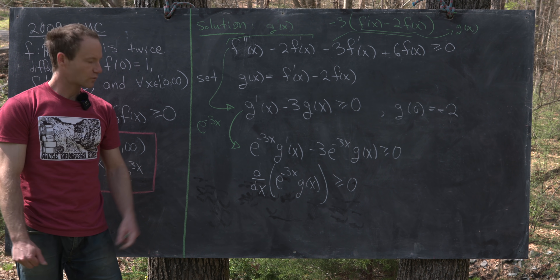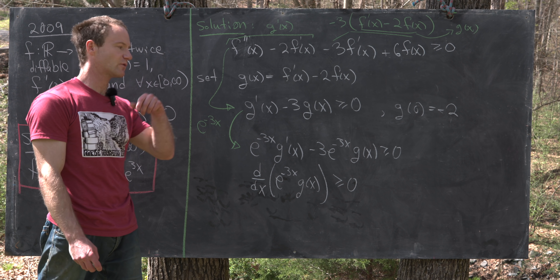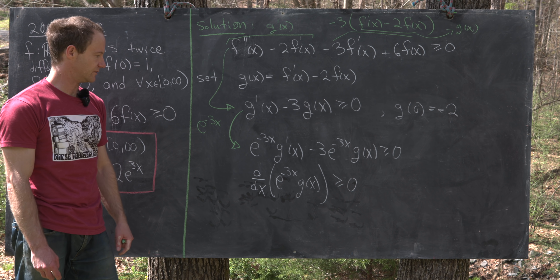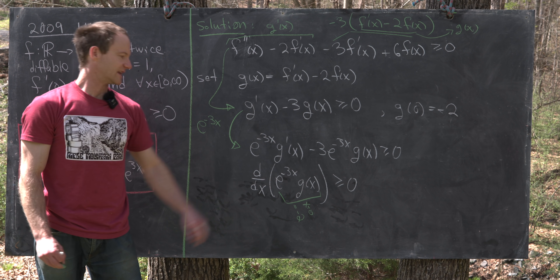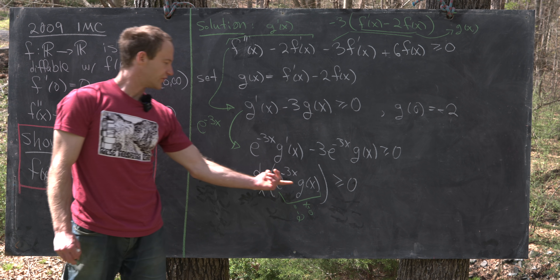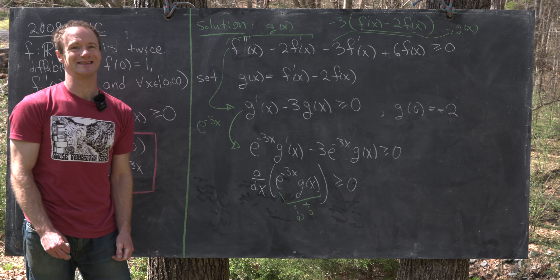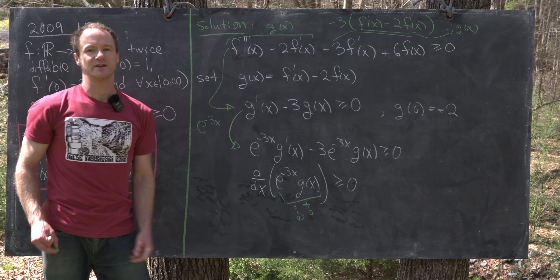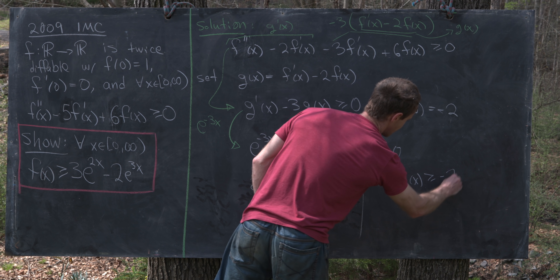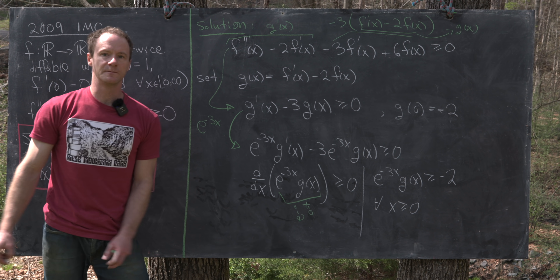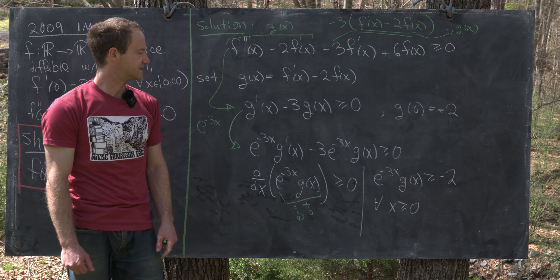Since g(0) = −2, we have e^{−3·0}g(0) = −2. The derivative of e^{−3x}g(x) is ≥ 0, meaning the function is increasing. Starting at −2 and increasing, we conclude e^{−3x}g(x) ≥ −2 for all x ≥ 0.